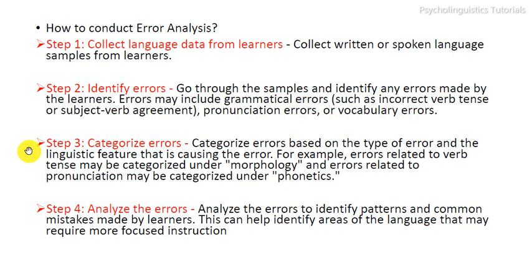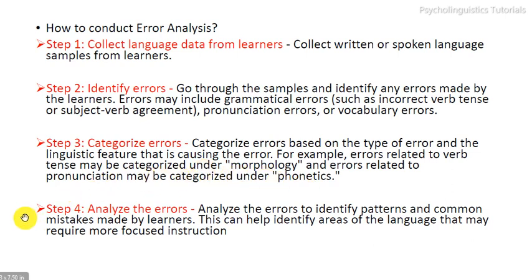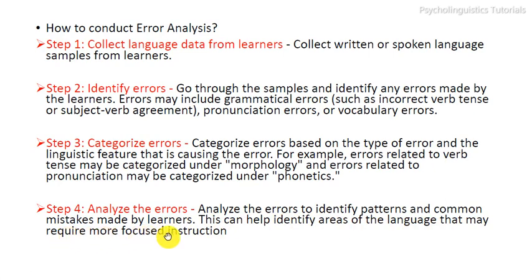Step three is to categorize errors based on the type of error and the linguistic feature causing it. For example, errors related to verb tense may be categorized under morphology, and errors related to pronunciation under phonetics. Step four is to analyze the errors to identify patterns and common mistakes made by learners, which can help identify areas of the language that may require more focused instruction.